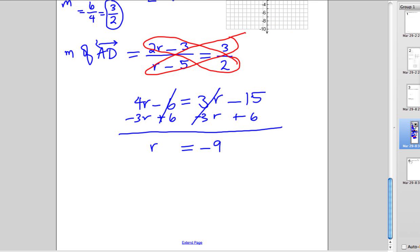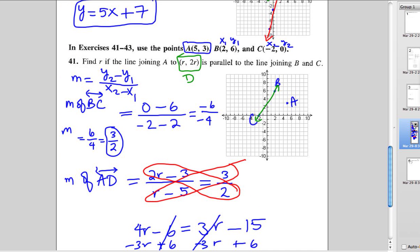So the point would be R, 2R. So that's negative 9, negative 18. Let's see if that makes sense graphically. So if we go to negative 9, negative 18, which is way down here somewhere, and we draw and we connect. Oh, there I go with my horrible line. When we connect those two points, it does look parallel to that line.